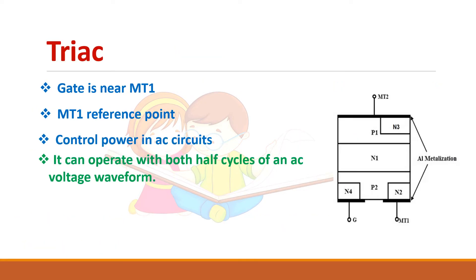If you see the construction of TRIAC, it has three terminals: MT1, MT2, and gate. MT1 is available near the gate and this is taken as reference. If you want to specify MT2 is positive, it means MT2 is positive with respect to MT1, or MT2 is negative with respect to MT1. So MT1 is taken as reference.